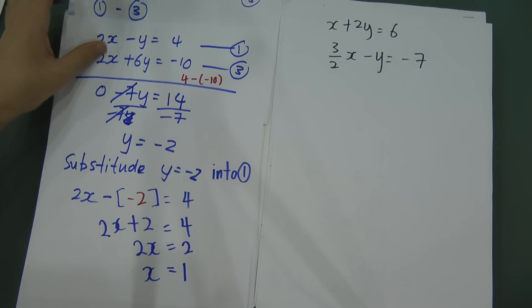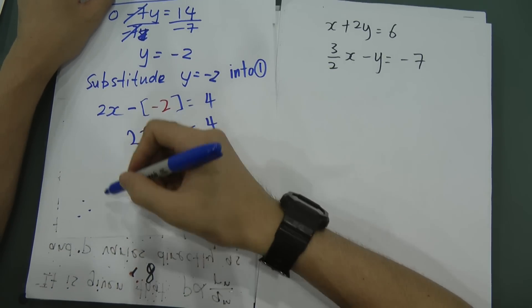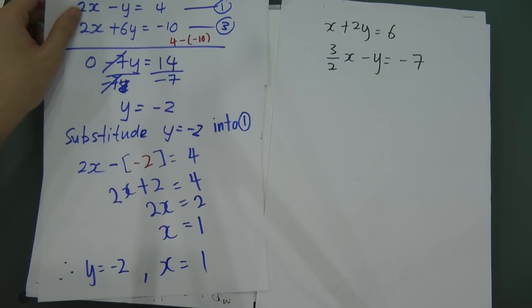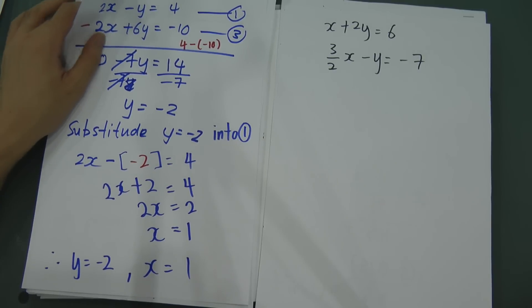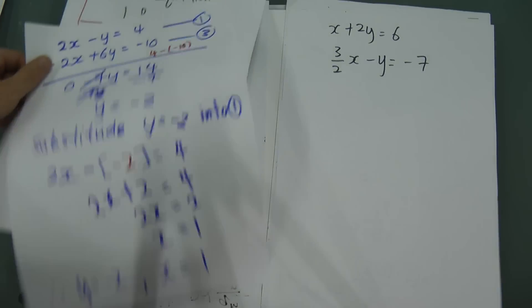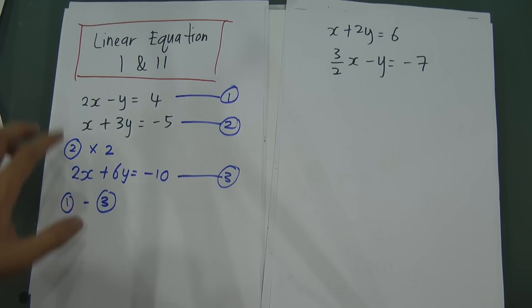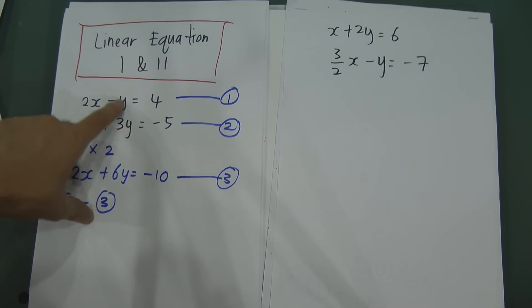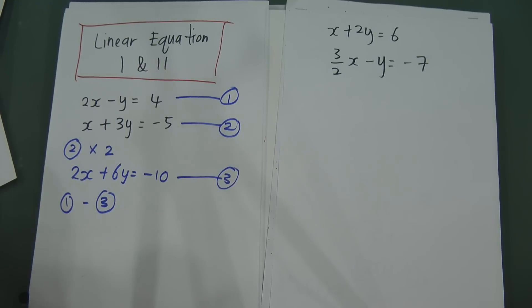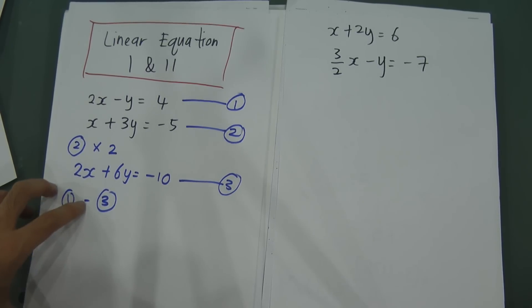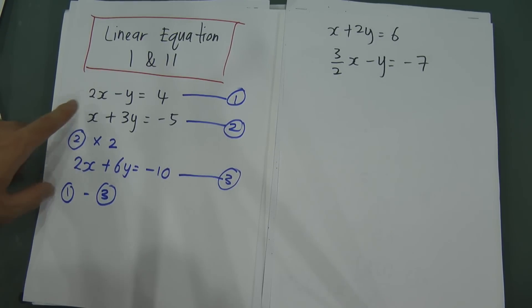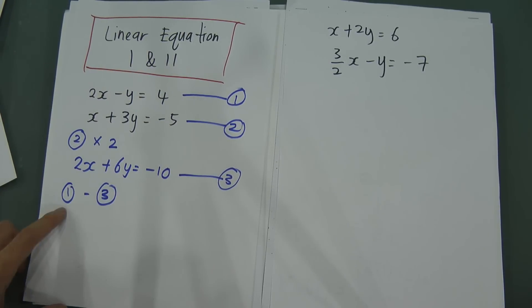Therefore we got two answers: y equal to negative 2 and x equal to 1. That's all for the first linear equation. What you need to do is make sure one of the x or one of the y terms becomes the same, and then you can delete it by subtracting. In this equation I multiplied 2 for everything to make 2x, then used equation 1 minus equation 3 to delete 2x and solve the rest.